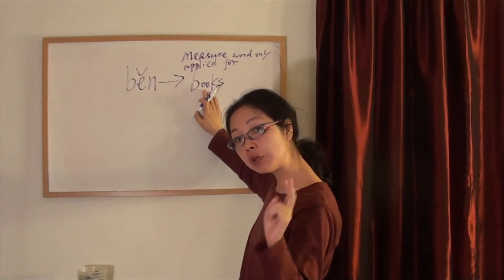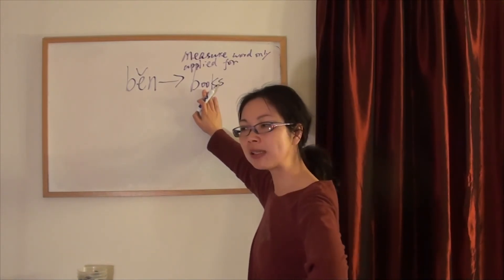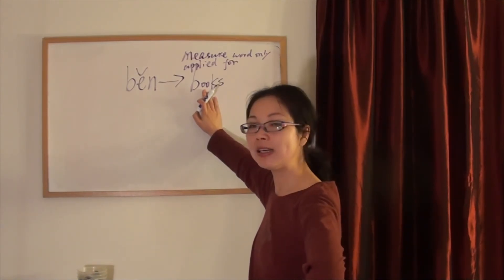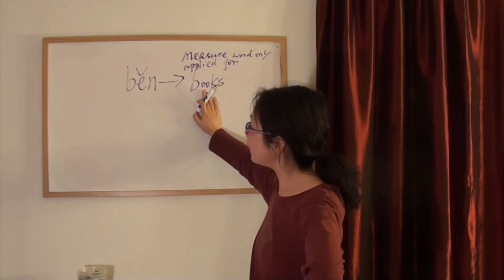本 is the only measure word for books. 一本书, 两本书. So hey, what is 两? Why didn't you say 二? Okay, that is what we will talk about tomorrow.